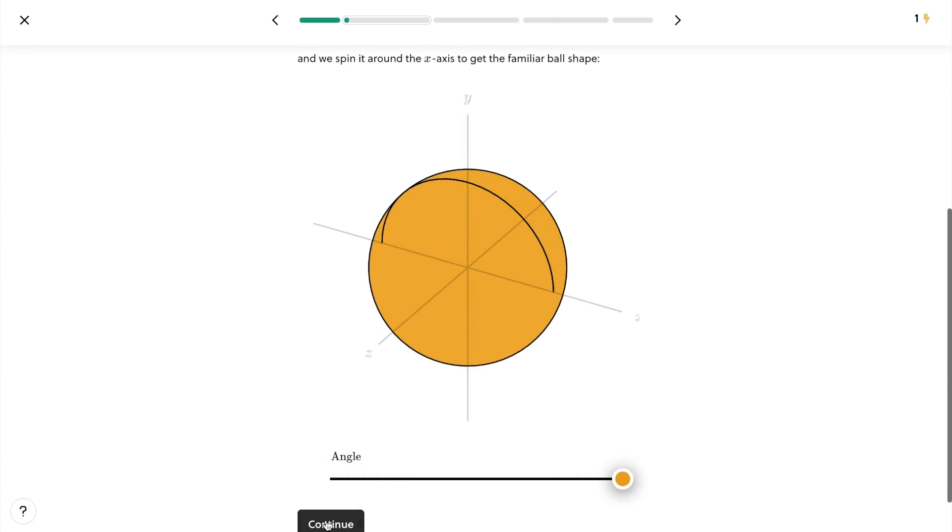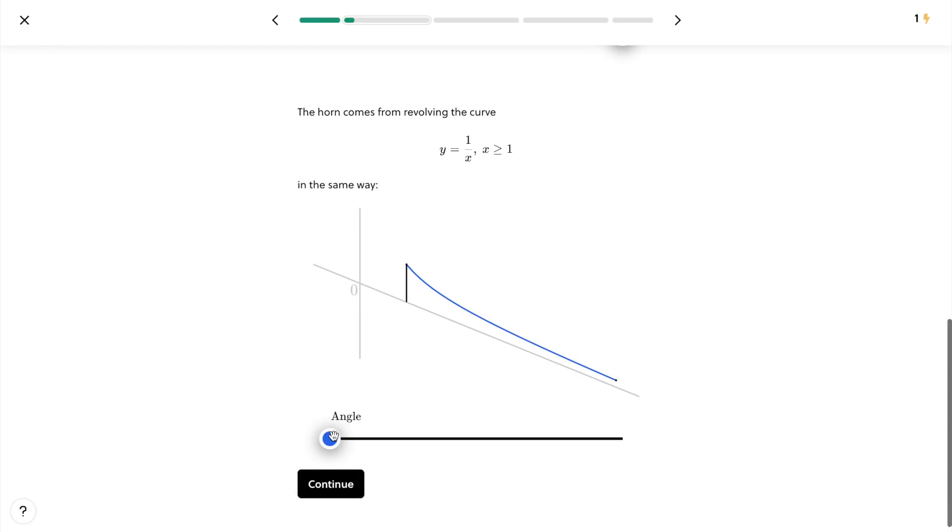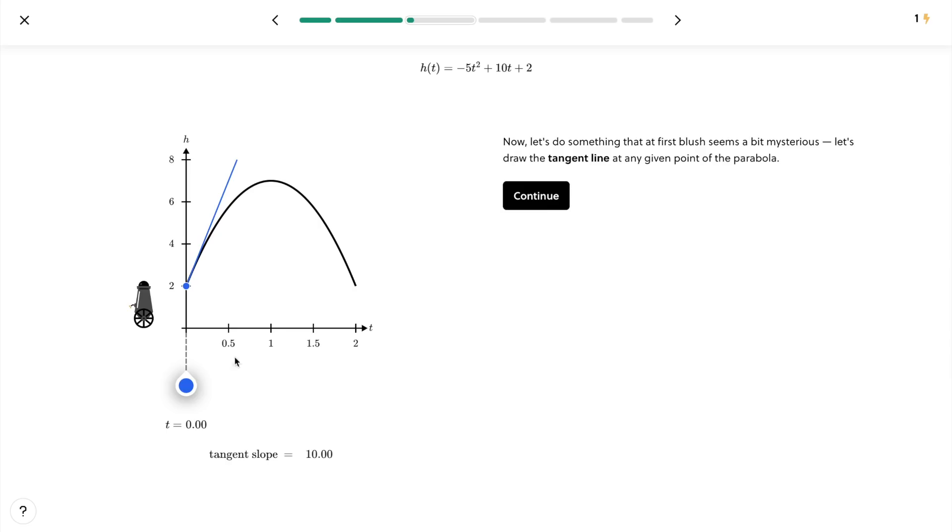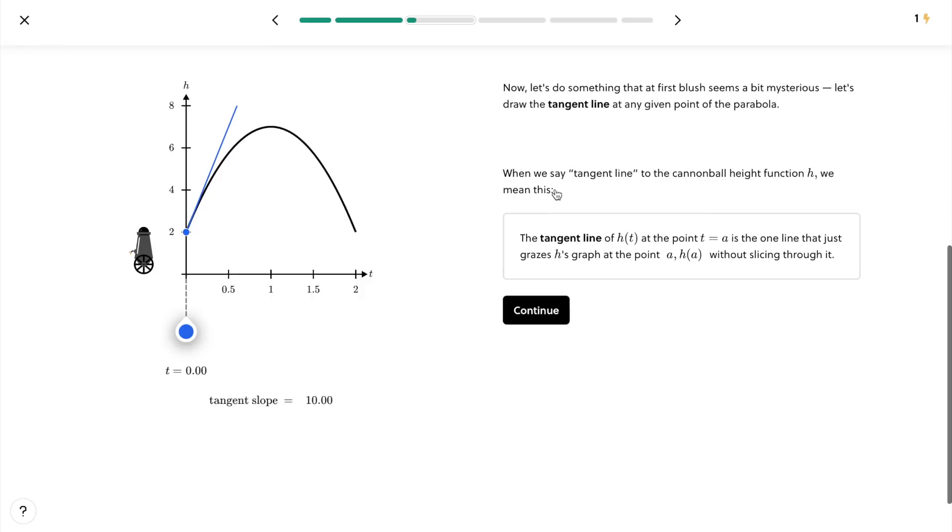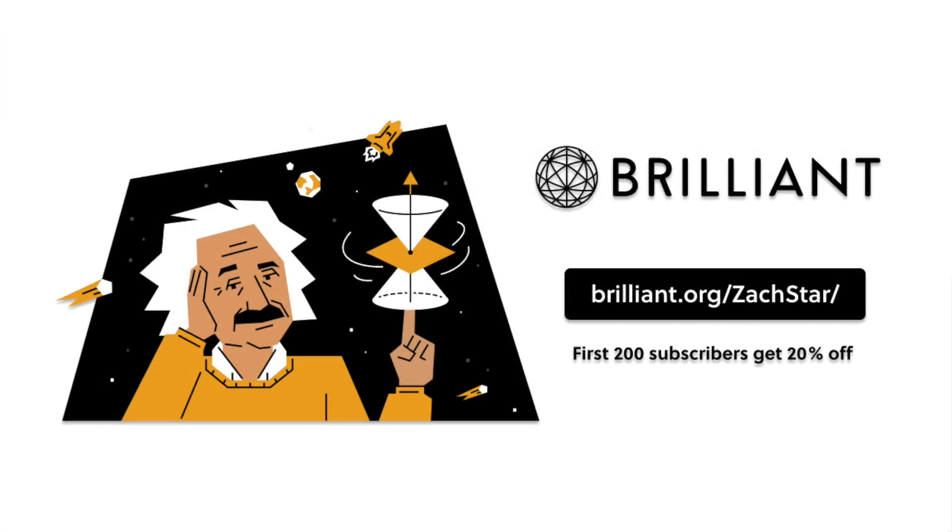And with this platform, you can learn at your own pace, on the go, and there's always something new to explore, no matter what your level of education. So to get started right now, go to brilliant.org slash Zach Starr, or click the link below, and the first 200 people to sign up will get 20% off their annual premium subscription.